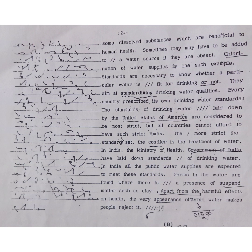Sometimes they may have to be added to a water source if they are absent. Chlorination of water supplies is one such example. Standards are necessary to know whether a particular water is fit for drinking or not. They aim at standardizing drinking water qualities. Every country prescribes its own drinking water standards. The standards of drinking water laid down by the United States of America are considered to be most strict, but all countries cannot afford to have such strict limits. The more strict the standards set, the costlier is the treatment of water.